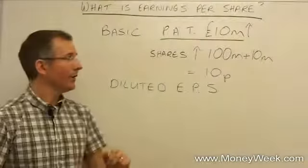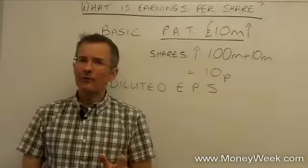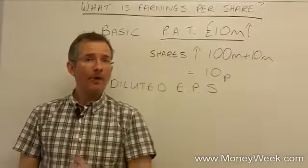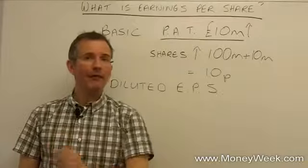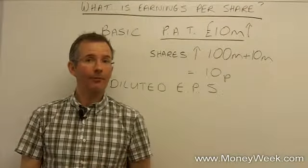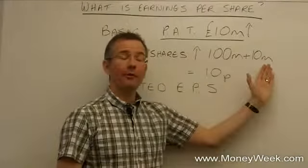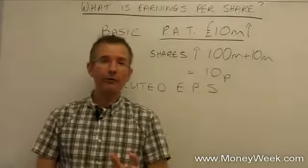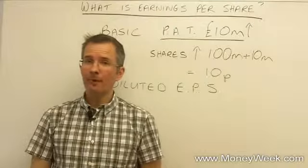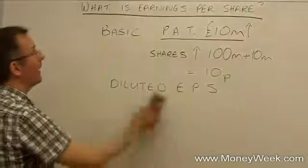What that means is the 10p would shrink a bit. For most investors, diluted earnings per share is a matter of interest rather than being essential. Basic earnings per share is what a lot of investors track, but just be aware that there are one or two versions of it. It's useful as a guide to performance over time and it's the basis for the price earnings ratio. But is it flawless? No. There are at least a couple of problems with earnings per share worth being aware of.